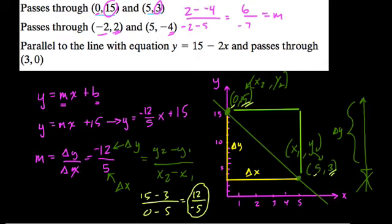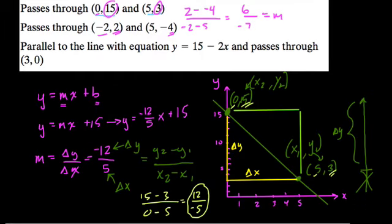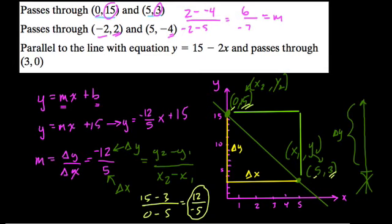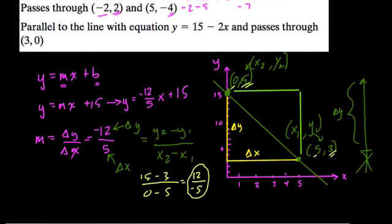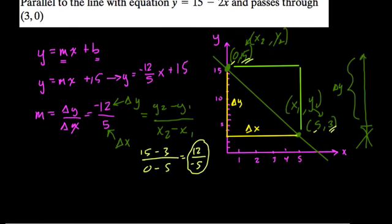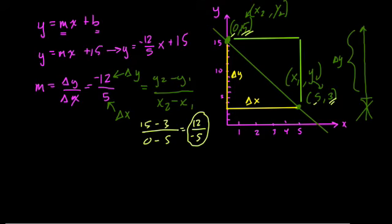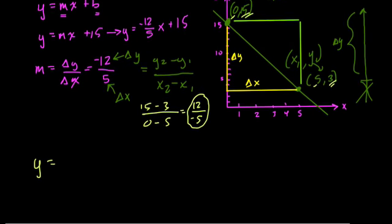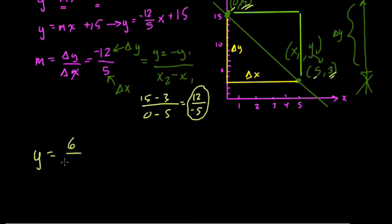So now we need to find an equation. We need to find when this thing crosses the y axis. Well, how can we do that? We can set up a table, we can set up a graph, but can we solve it algebraically? It's kind of fun. Let's do that. Okay, so how do we do it? Well, y is equal to our slope. Our slope is 6 over negative 7, okay? x plus b, and b is the unknown.